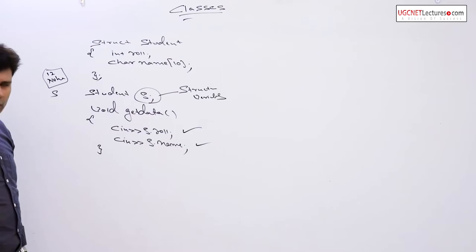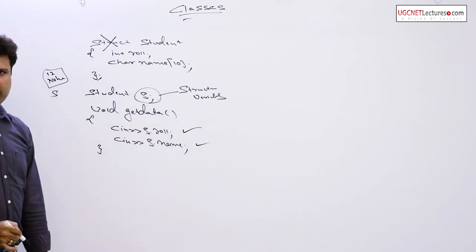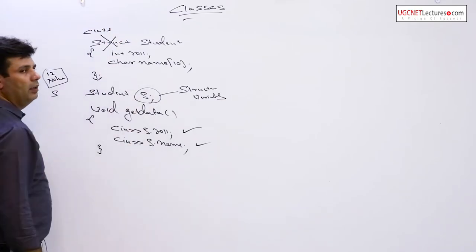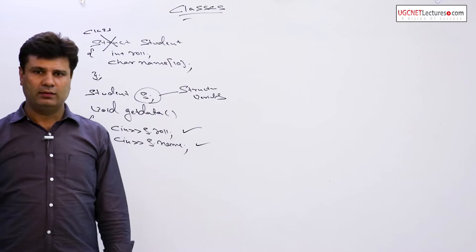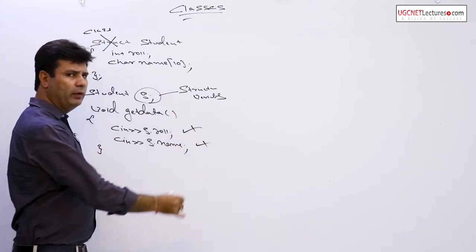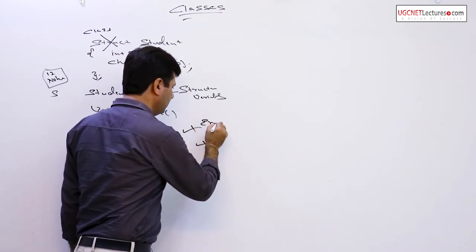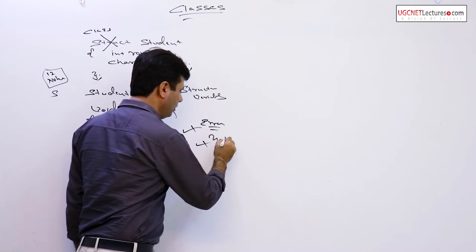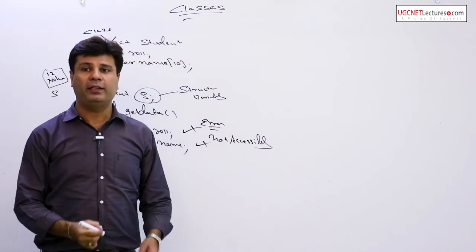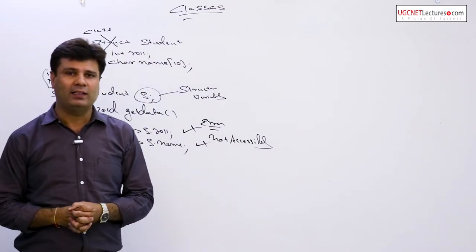Let me make a small change. Instead of struct keyword, if I use another keyword class, the moment you write class, the compiler will give an error. The error will be not accessible. The reason behind why? Why is it not accessible? Because now we are studying OOPs.